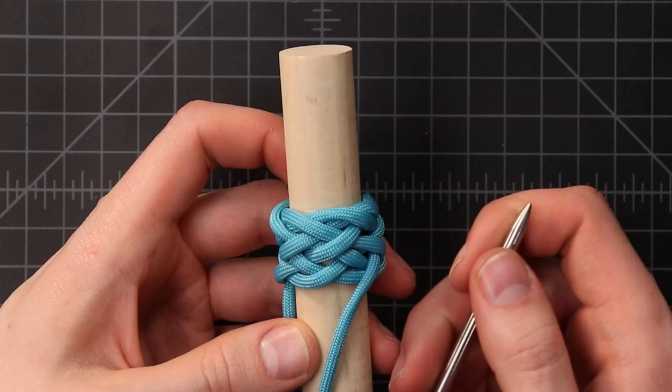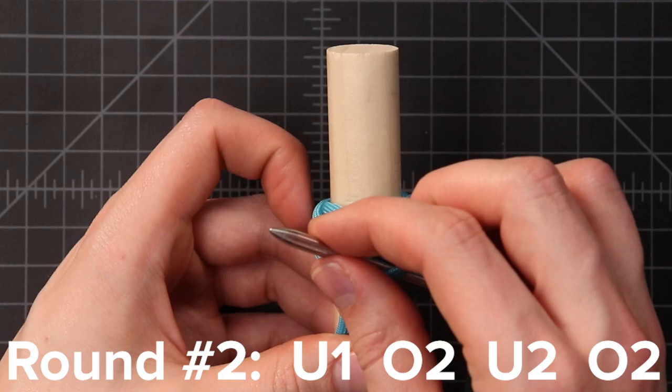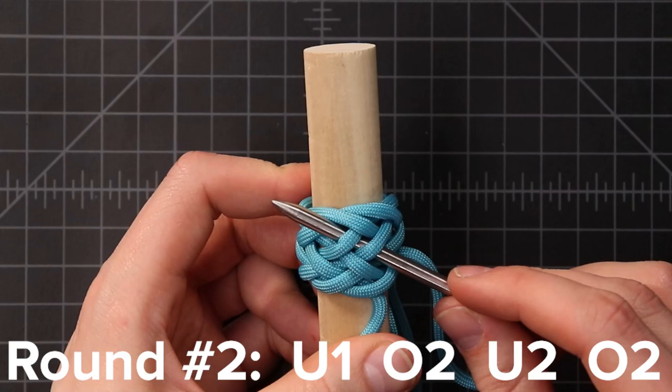And back up to the top, using the same pattern. So we crossed over this bight, so we're gonna be heading back up right here. So that's an under one, over two, under two, over two.